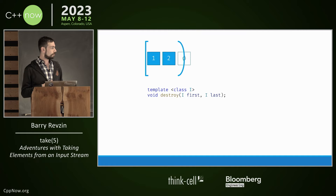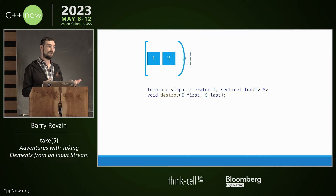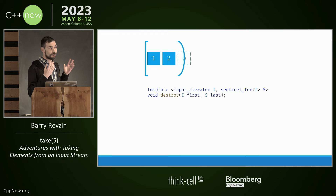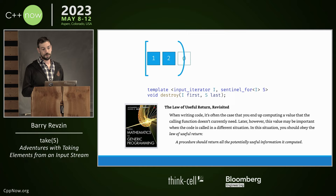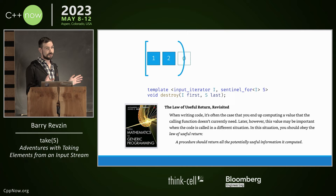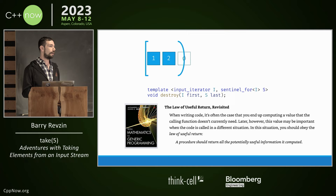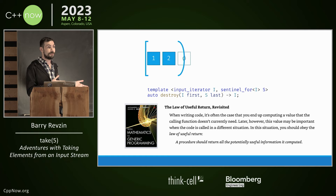Iterators aren't very useful without algorithms. Take destroy — an algorithm we've had since the beginning that just runs through and calls the destructor of every element. Once upon a time the signature took two iterators and returned void. C++20 relaxes this model with the iterator-sentinel concept: they don't have to be the same type anymore. We don't want to return void anymore because we can do better. Going back to Stepanov, he gives us the law of useful return: a procedure should return all the potentially useful information it computed. So destroy now returns the new end iterator it computed along the way, since it has to do this work anyway.